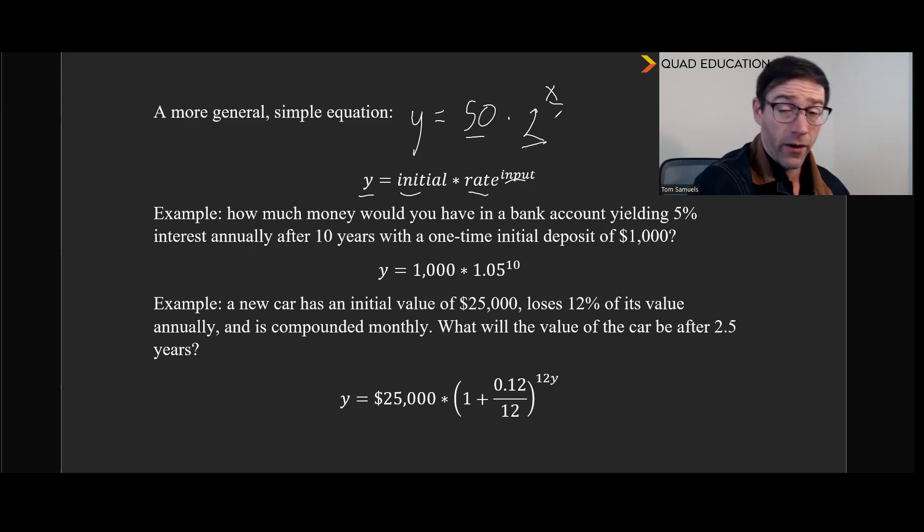And so one application of exponential growth and decay, which you'll see very often in the real world, is interest and compounding growth and decay there. So the example here, how much money would you have in a bank account yielding 5% interest annually after 10 years in that account with only a one-time initial deposit of $1,000? So what that's telling you is we basically have a general equation of Y equals whatever that initial deposit is multiplied by our growth rate. So this is why knowing percentages is so important for exponential growth and decay, because you need to understand that 1.05 is 5% growth.